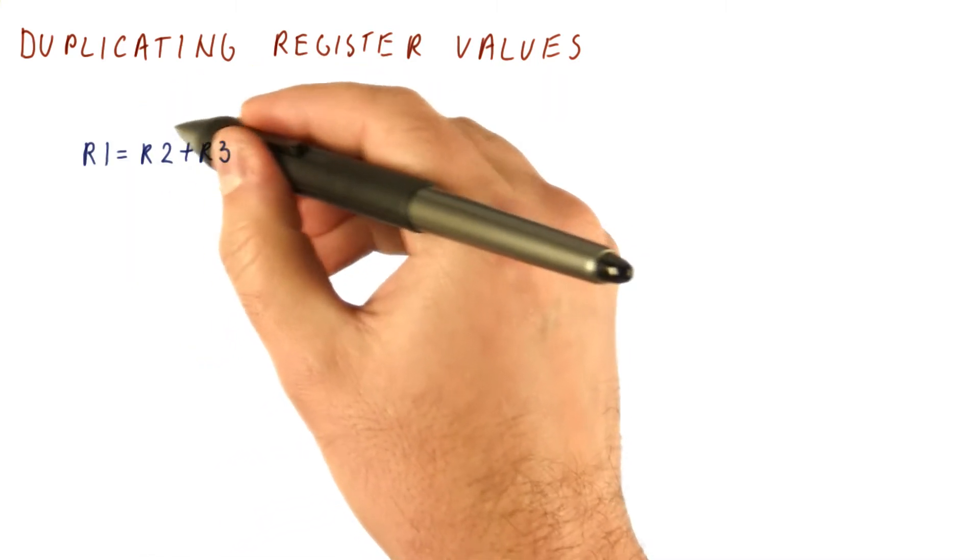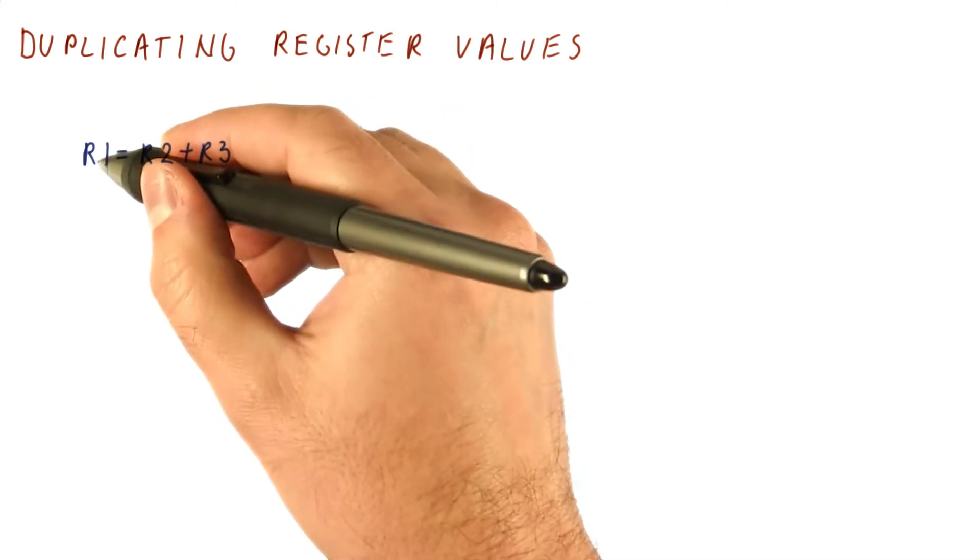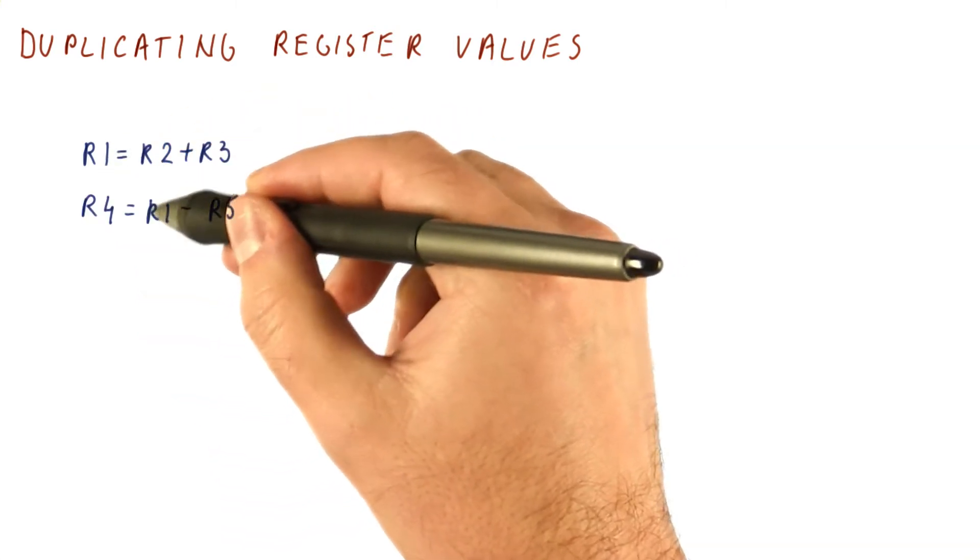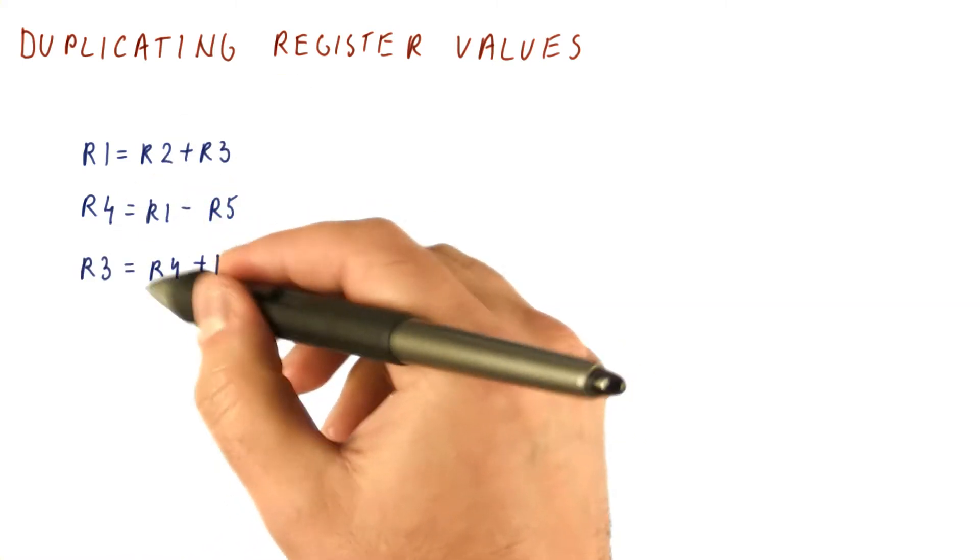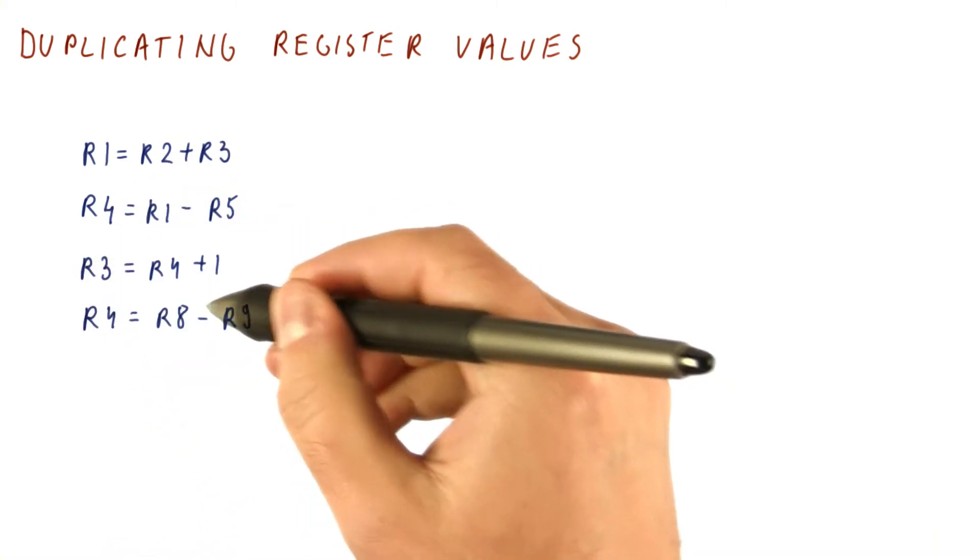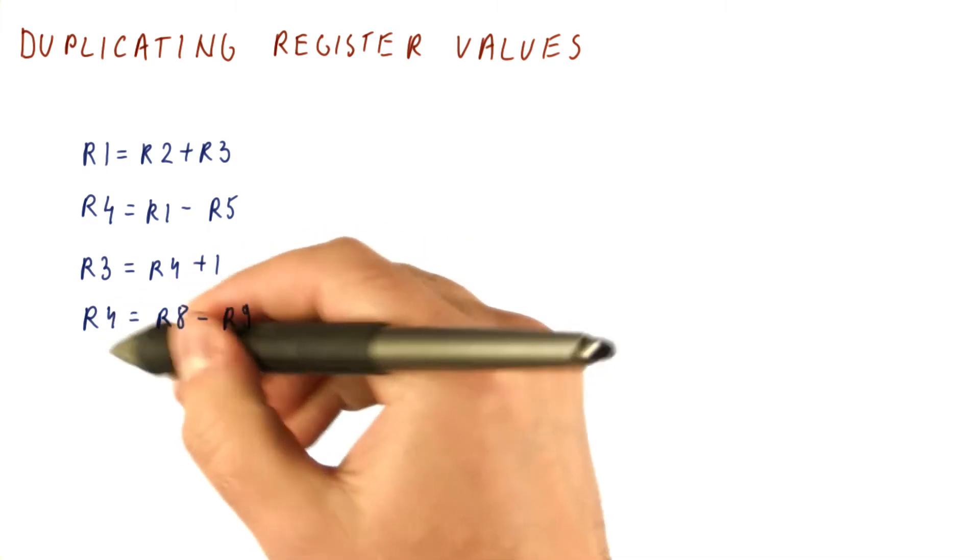We have an instruction here that adds R2 and R3 and puts the result in R1. Then we have R1 minus R5 goes into R4. Then we have R4 plus 1 goes into R3. Then we have R8 minus R9 goes into R4.